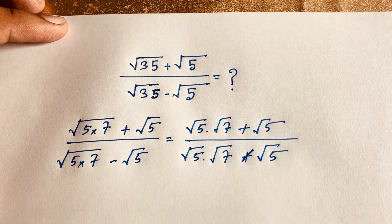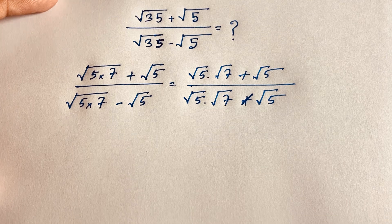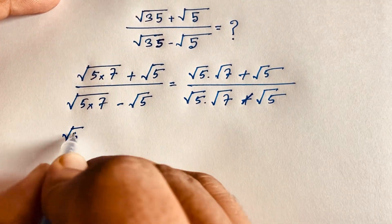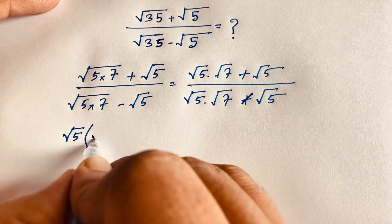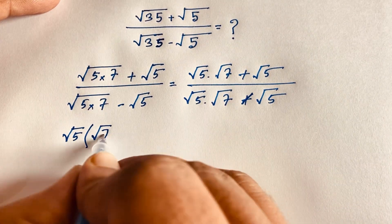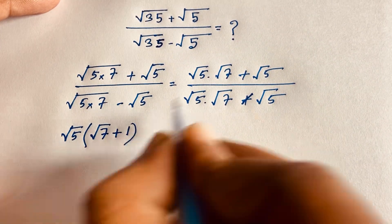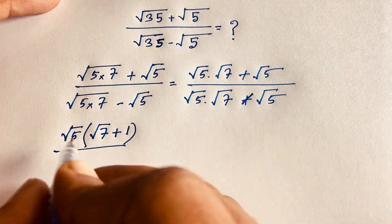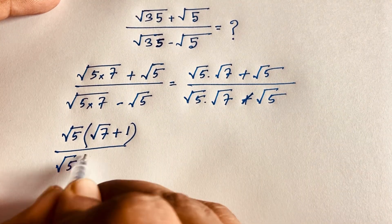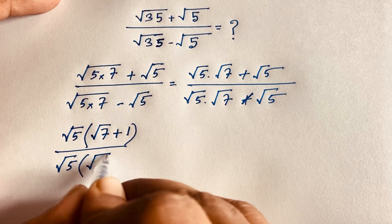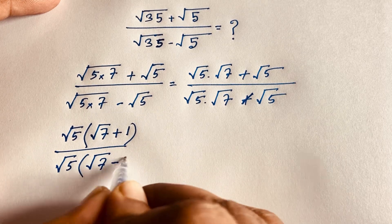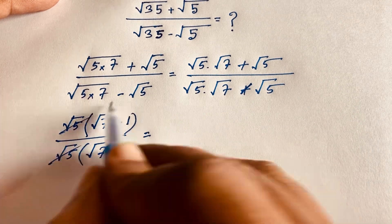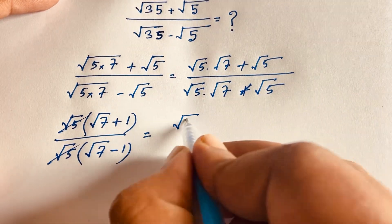Now I can see that square root of 5 is common in the numerator, and square root of 5 is also common in the denominator. So dividing out, the numerator becomes square root of 7 plus 1, and the denominator becomes square root of 7 minus 1.